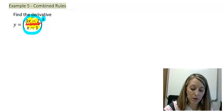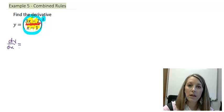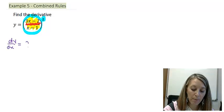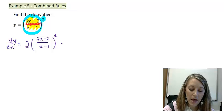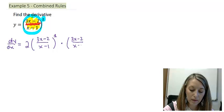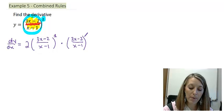Let me go ahead and write out this step. My derivative, dy/dx, uses the chain rule first — I bring my power down, I keep my inside the same, I subtract a power to the first power, times the derivative of the inside. So I had one inside piece and one outside piece, I started with my chain rule, brought my power down, kept my inside piece the same, and subtracted a power.